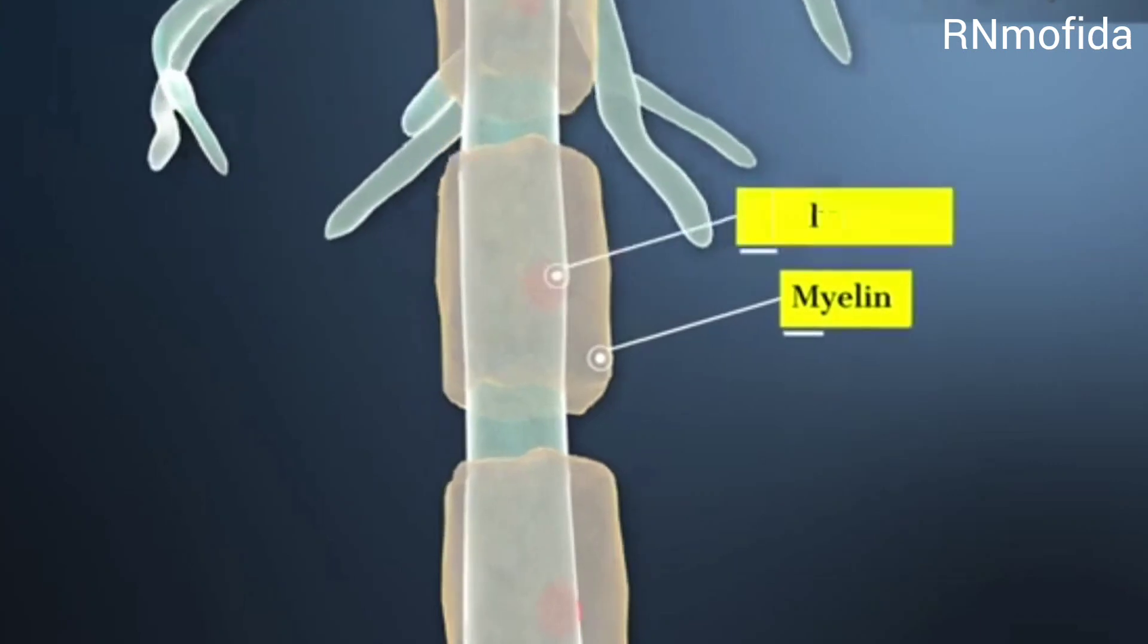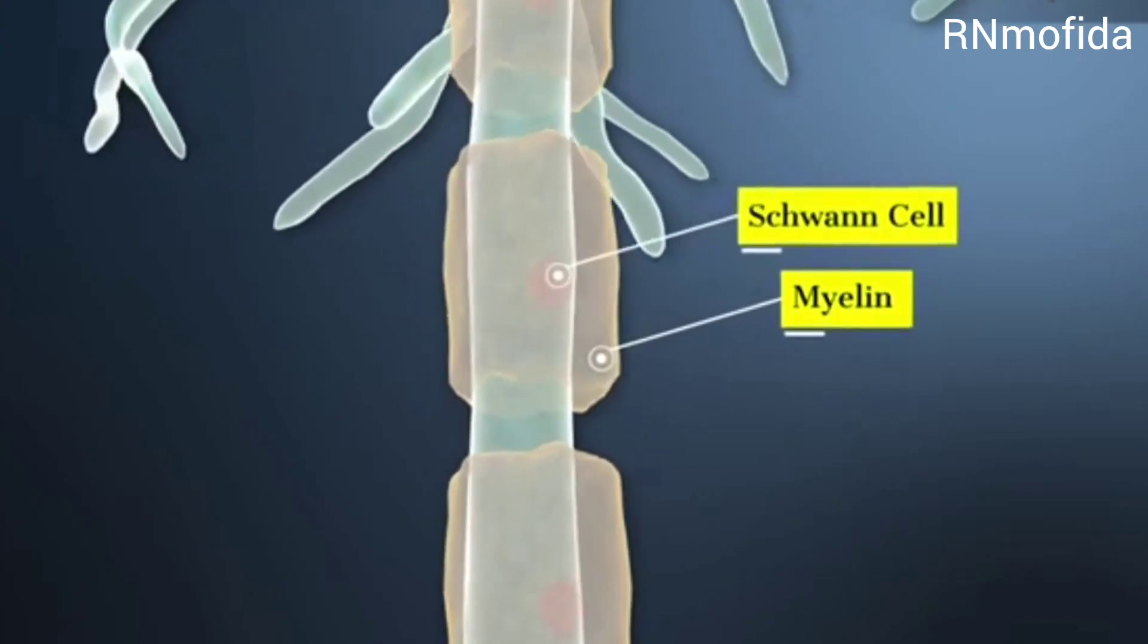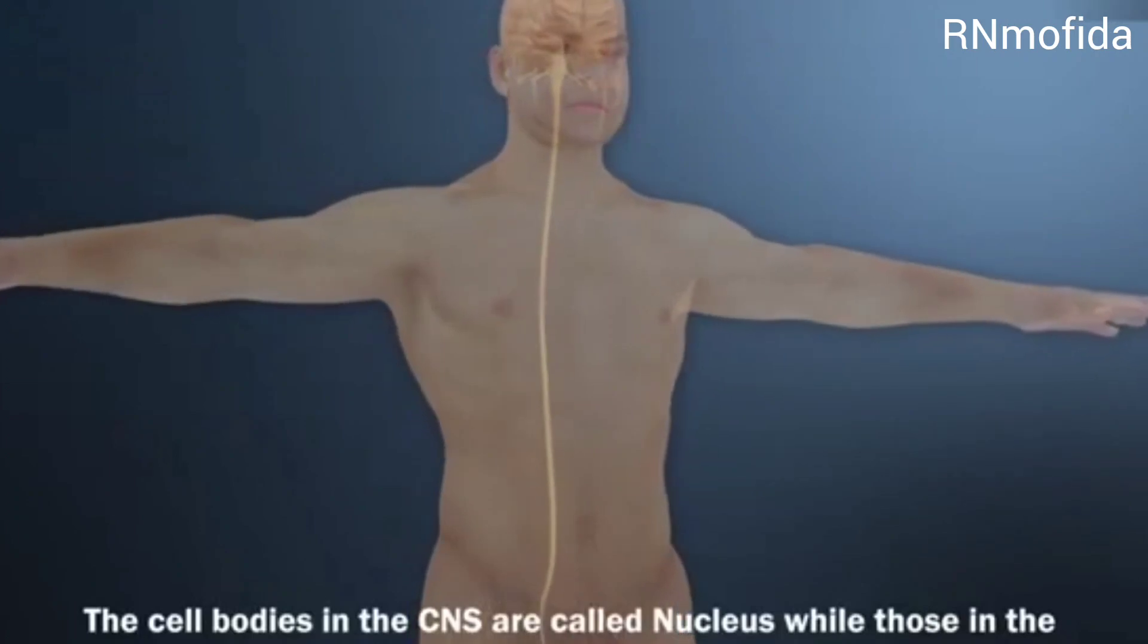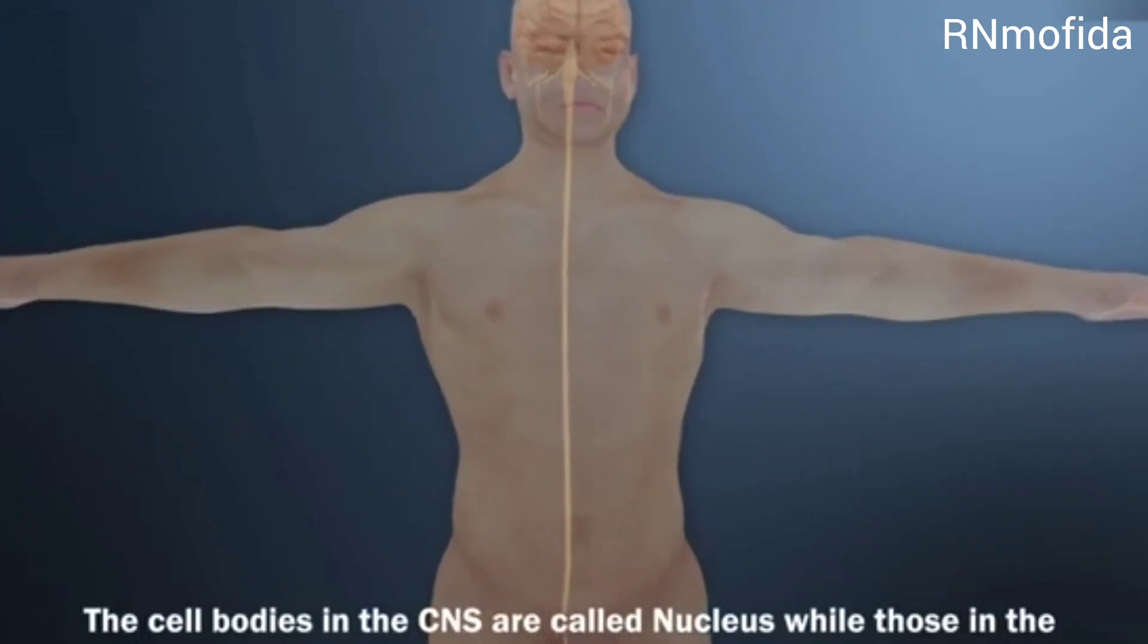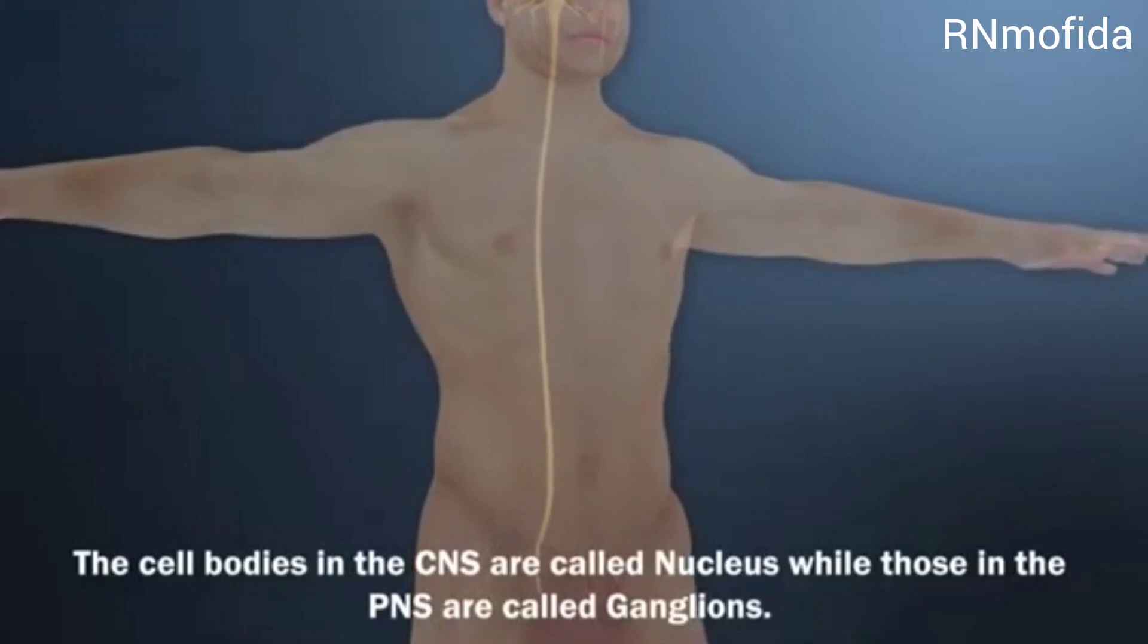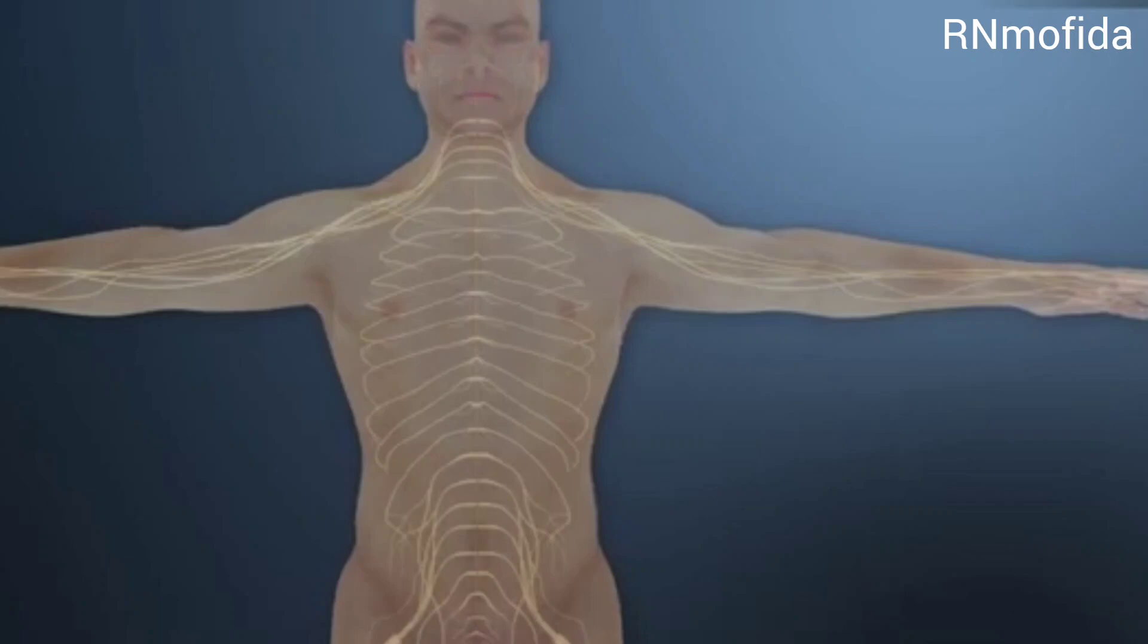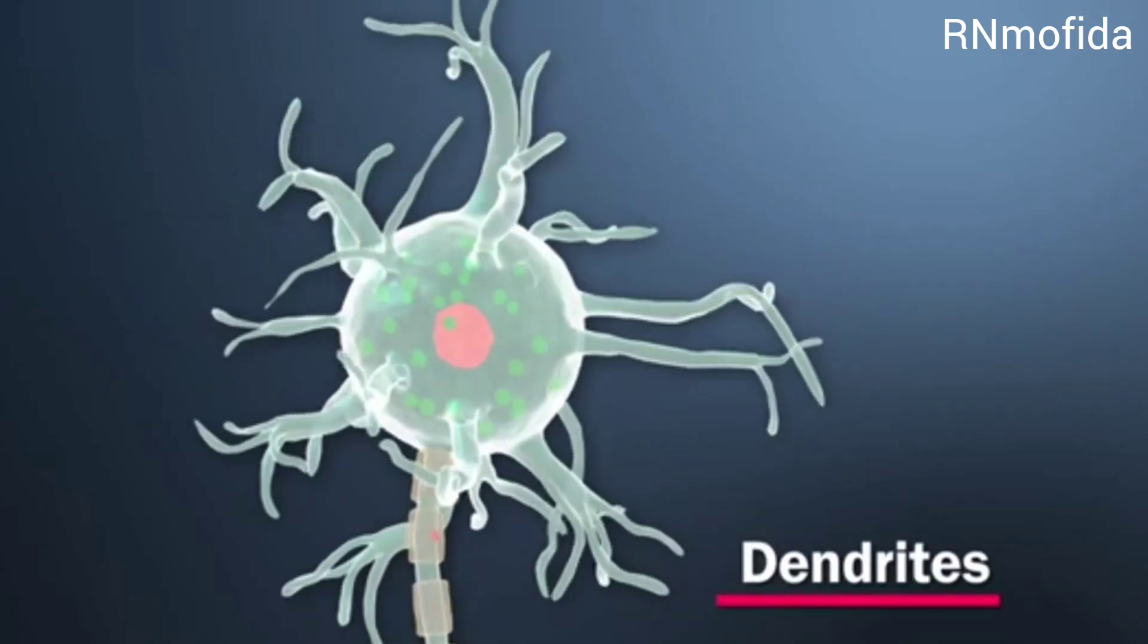Schwann cells help in the production of myelin. The cell bodies which are present in the central nervous system are called nucleus, and those present in the peripheral nervous system are called ganglions. The cell body contains projection-like structures called dendrites, which contain Nissl structures and nerve fibers.